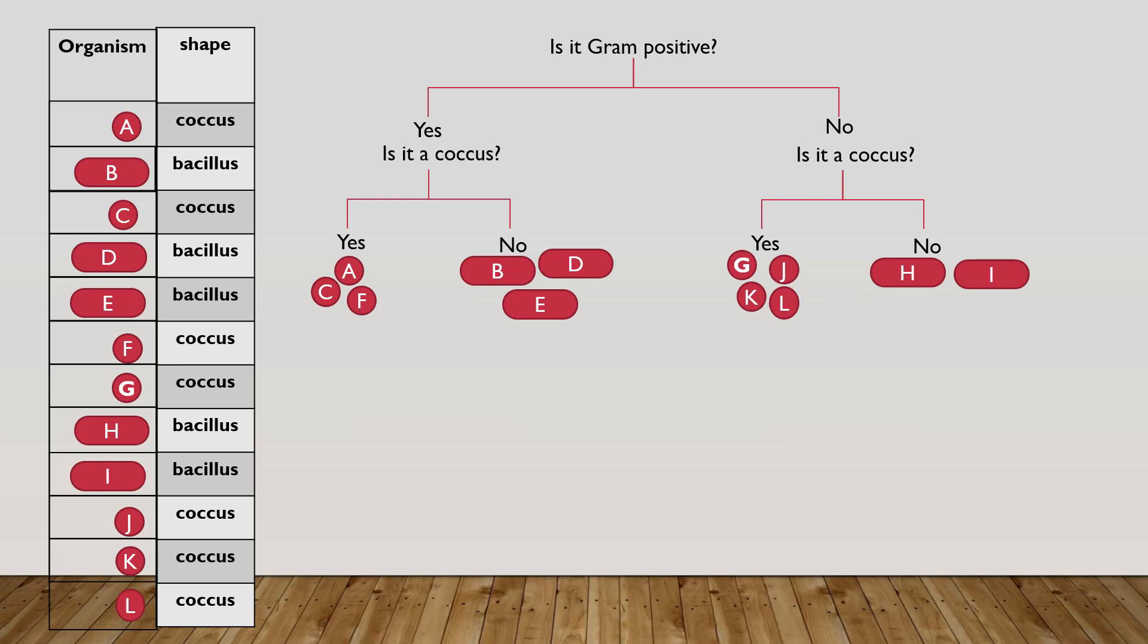You want to continue separating each organism until you get 12 individual bacteria in their own group. So to do this, choose one group at a time until you reach the very end. So in this case, I'm going to start with groups A, C and F.